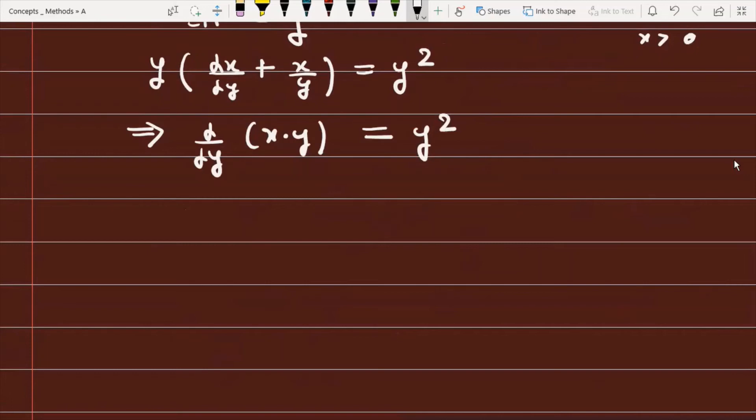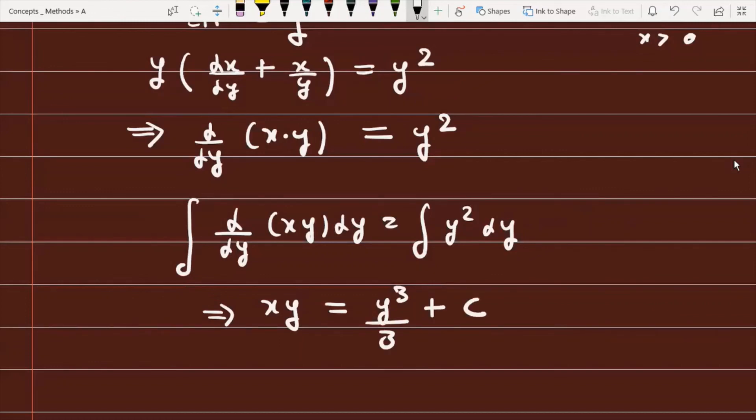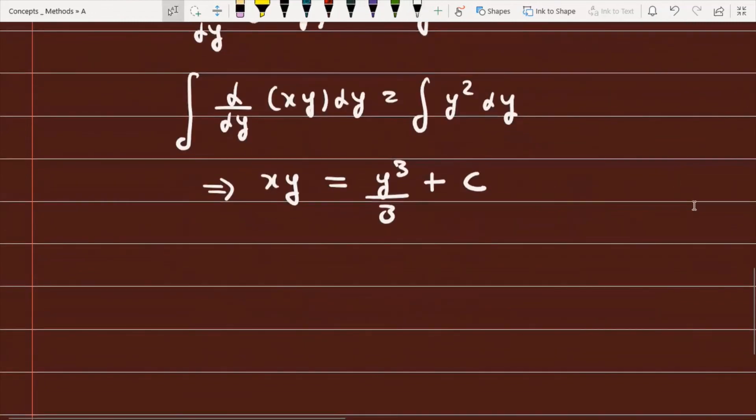Now we integrate both sides: ∫d(xy) = ∫y² dy. This gives xy = y³/3 + C. So finally, this is the solution for the given differential equation.